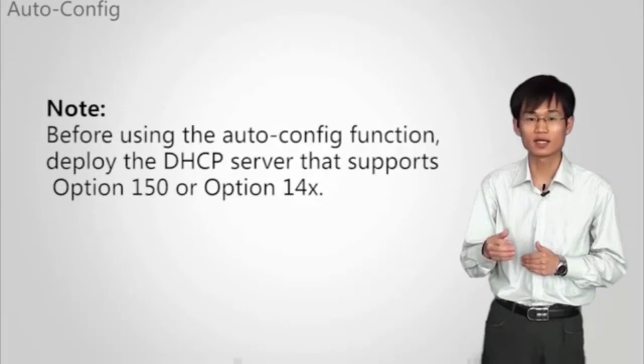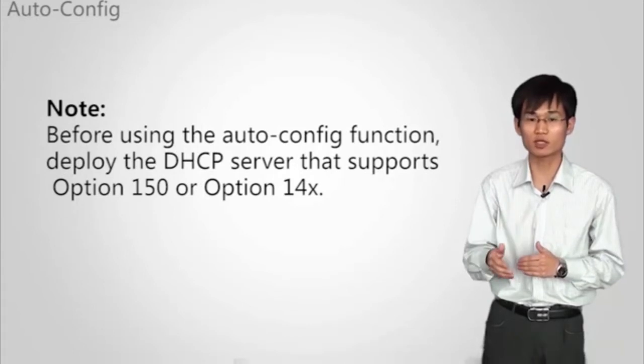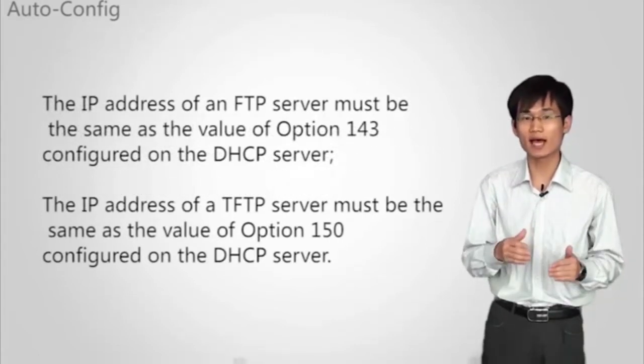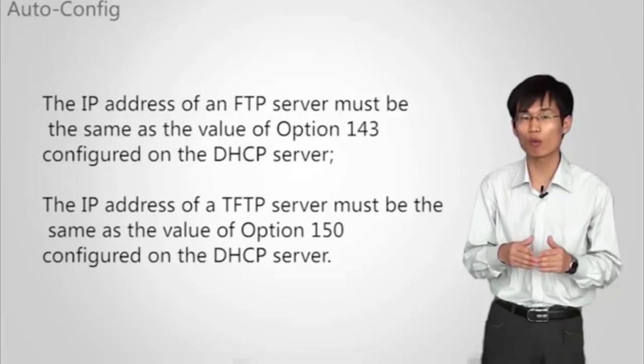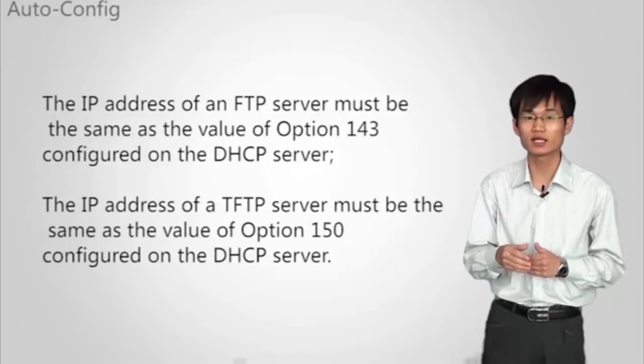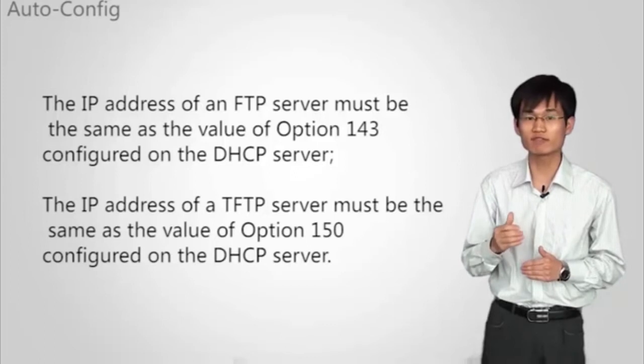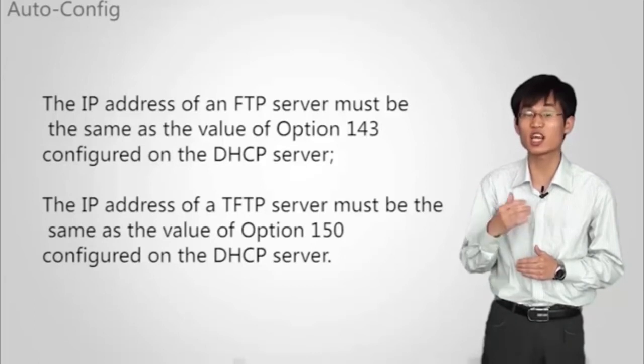Please note that before using the auto-config function, deploy the DHCP server that supports option 150 or option 143. The IP address of an FTP server must be the same as the value of option 143 configured on the DHCP server. The IP address of a TFTP server must be the same as the value of option 150 configured on the DHCP server.